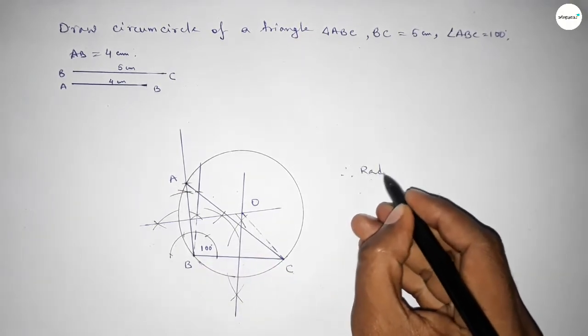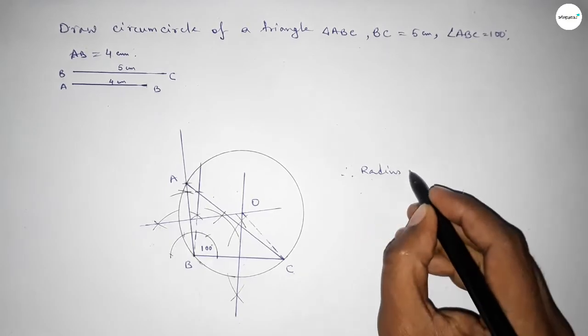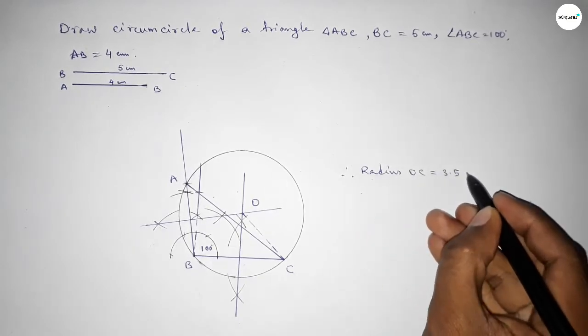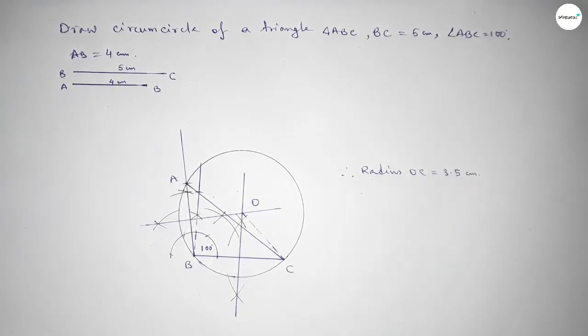Measuring the radius: OC equals 3.5 centimeters. That's all — thanks for watching. If this video was helpful to you, please share it.